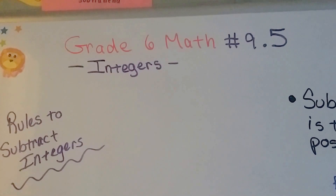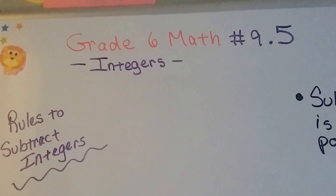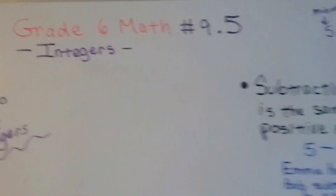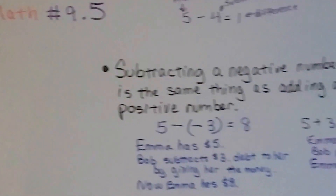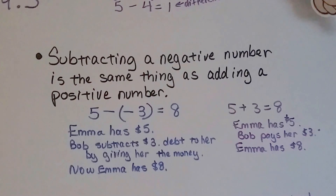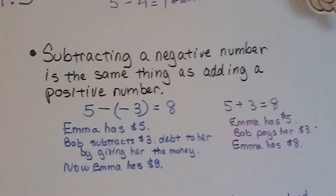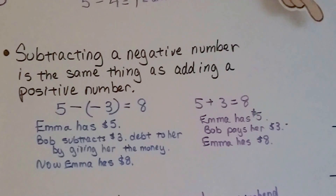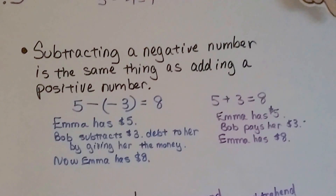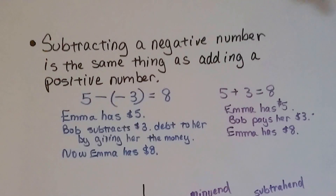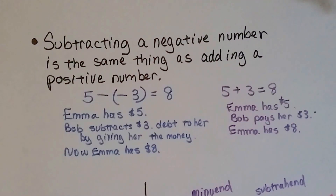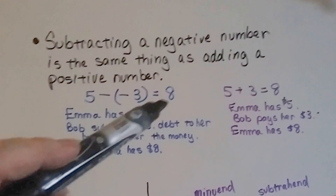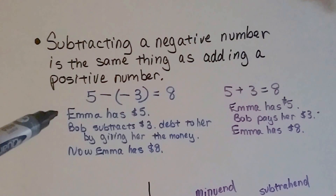Grade 6 math, number 9.5: rules to subtract integers. Subtracting a negative number is the same thing as adding a positive number. If we've got 5 and we're taking away a negative 3, it's going to equal 8.